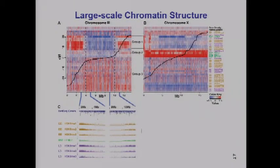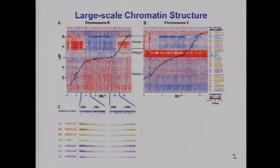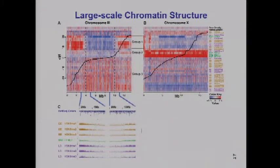Some patterns were striking. Looking at histone marks on chromosome 3, we found an elevation of repressive marks like H3K9 at the chromosome arms and a depletion of activating marks — seen on all autosomes, with fairly sharp junctions between the repressive arms and the rest. The sex chromosome showed a completely different marking pattern than the autosomes — very interesting large-scale chromatin patterns.